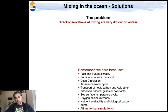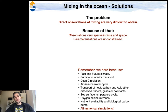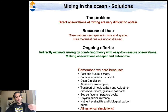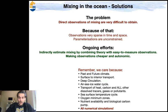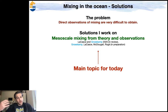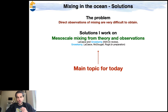So what's the problem? Direct observations of mixing are very difficult to obtain, observations are sparse in time and space, and parametrizations are unconstrained. Ongoing efforts aim to indirectly estimate mixing by combining theory with easier-to-measure observations such as temperature, salinity, and pressure. We want this because mixing influences many important quantities — meridional overturning circulation, climate processes, oxygen minimum zones. Today we'll mostly talk about mesoscale mixing: an indirect estimate from theory and observations, work done with Joe LaCasse, Trevor McDougall, and Marine Roger.